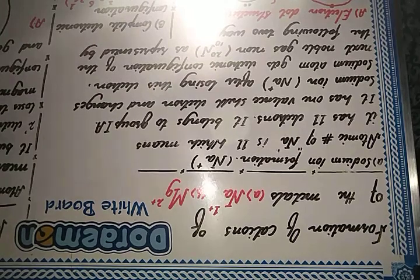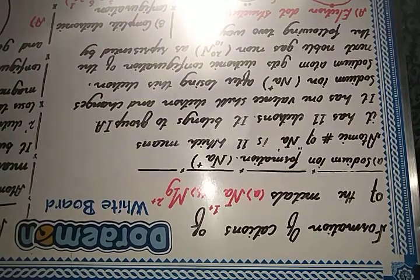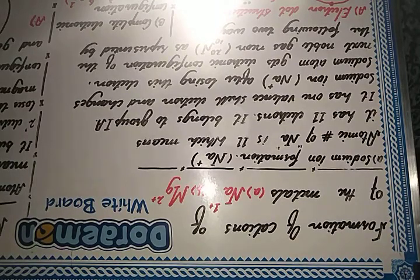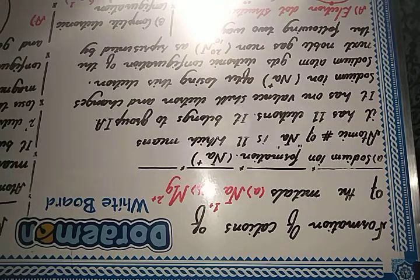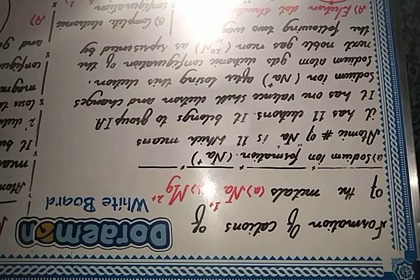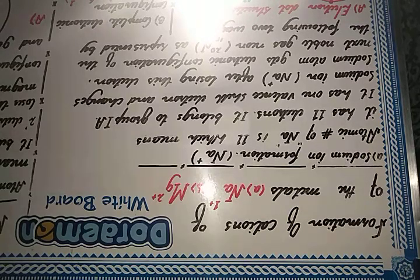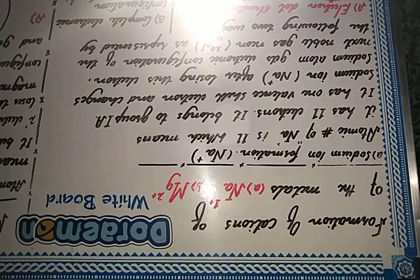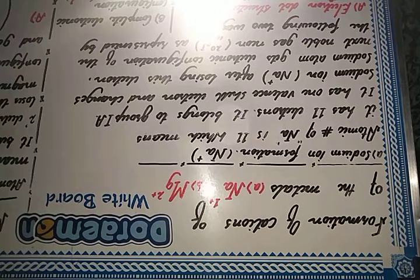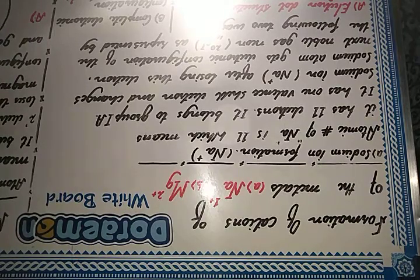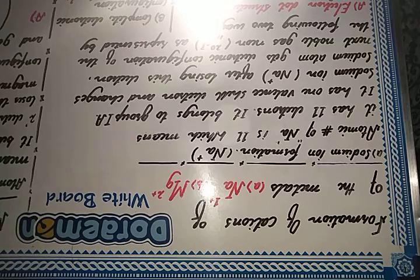In today's tutorial we will discuss the formation of cations, or positive ions, of sodium and magnesium metals. We'll see how these metals form these ions and the ways through which we can represent these cations — either diagrammatically using the Lewis dot structure. Let's start with sodium ion formation first.